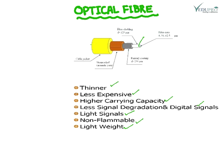The core is surrounded by another cylindrical layer with a lower refractive index — this is called the cladding. Outside that are primary and secondary jackets, which protect the fiber from external atmospheric effects. The cladding helps to keep the light within the core through the phenomenon of total internal reflection. The light reflects internally and travels from one end to the other without escaping.